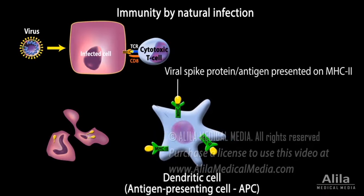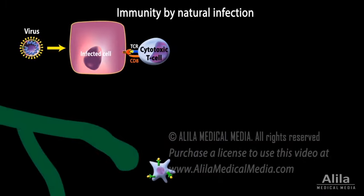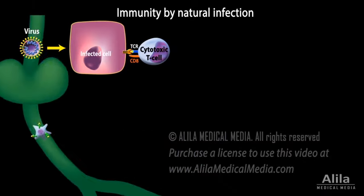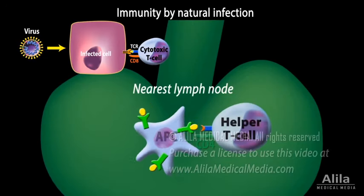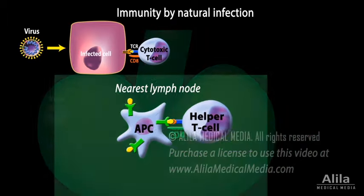After capturing the antigen, dendritic cells quickly leave the tissue for the nearest lymph node, where they present the antigen to another group of immune cells known as helper T cells.